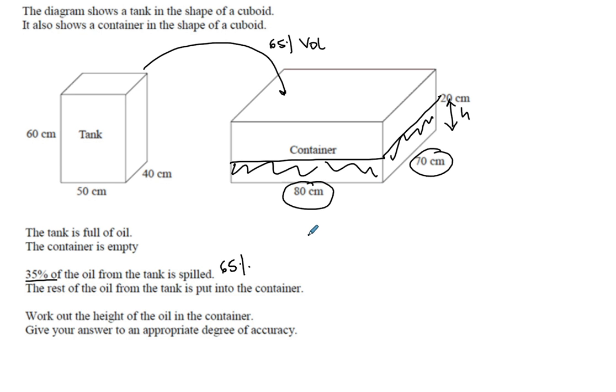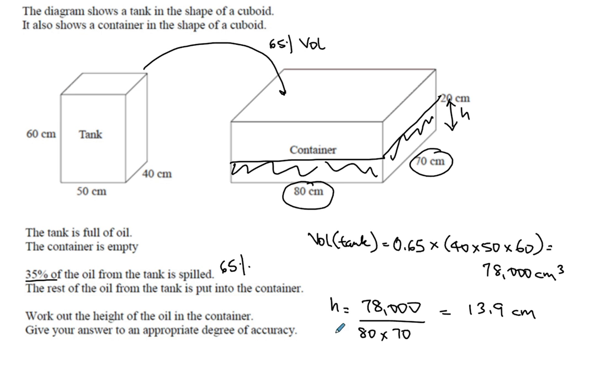So let's find the volume of the tank. Volume of tank. But remember, it's only sixty five percent. And we should be able to do the multiplier. So zero point six five times forty times fifty times sixty. Which will give you seventy eight thousand centimeter cubed. Now, again, we know our height would be seventy eight thousand divided by the eighty times seventy. And so the height would be thirteen point nine centimeters to an appropriate degree of accuracy. So we'll put one decimal place or three significant figures.